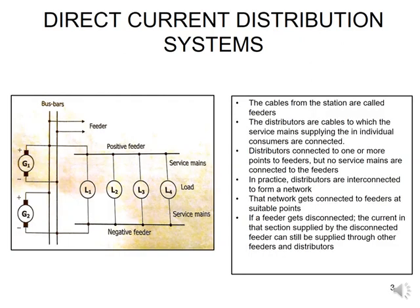The cables coming from your substation are called feeders. Your distributors are the cables from which individual consumers are being supplied and connected to. A distributor is connected at one or more points to your feeders. You can see that the distributors have loads L1, L2, L3, and L4 connected between two feeders, which are your positive and your negative feeder.